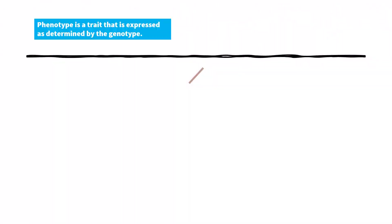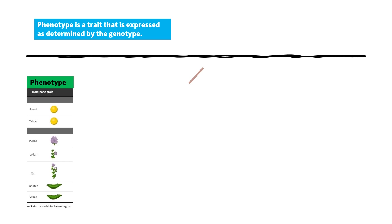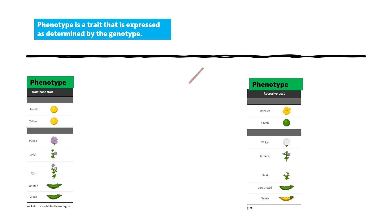Phenotype is a trait that is expressed as determined by the genotype. Here are examples of the phenotypes of the dominant trait: round seed, yellow seed, purple flower, axial flower, tall plant, inflated pod, and green pod. These are the phenotypes of the recessive traits: wrinkled seed, green seed, white flower, terminal flower, short plant, constricted pod, and yellow pod.